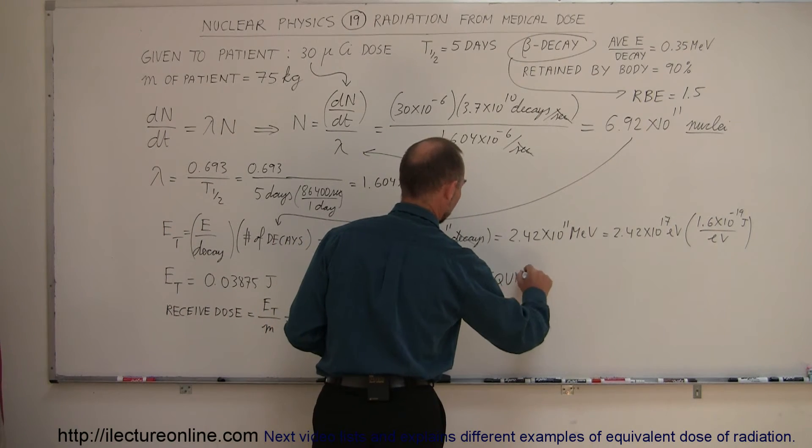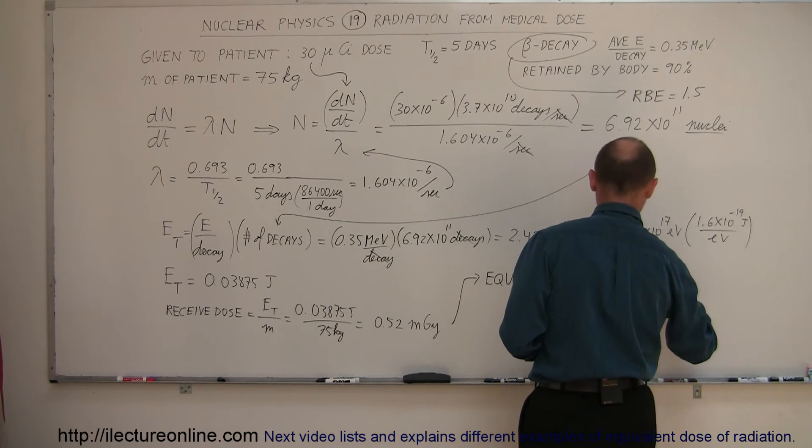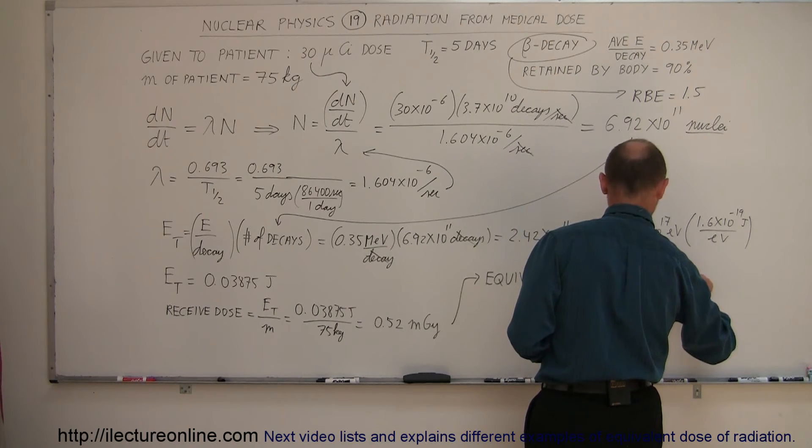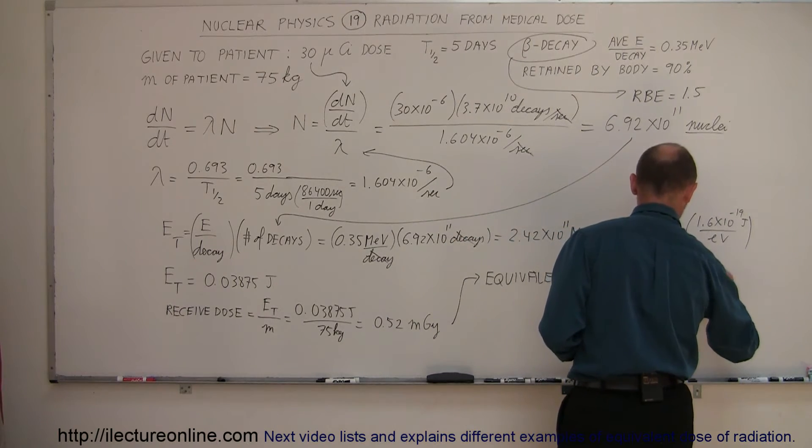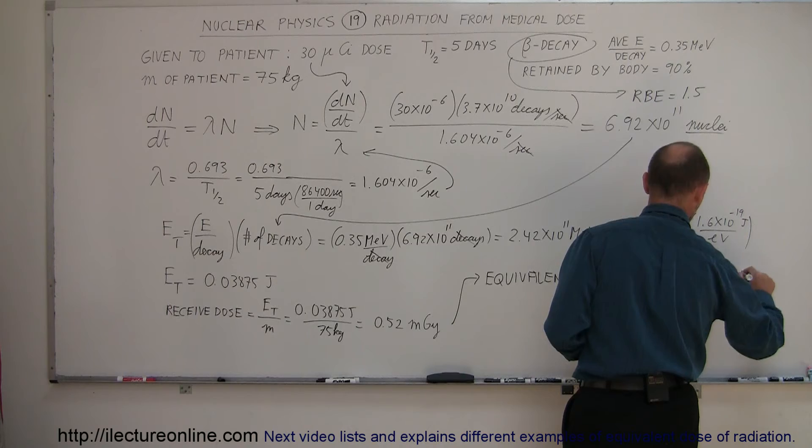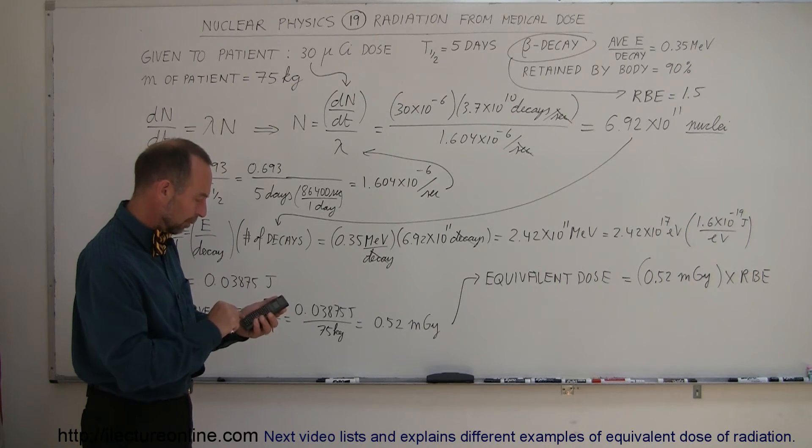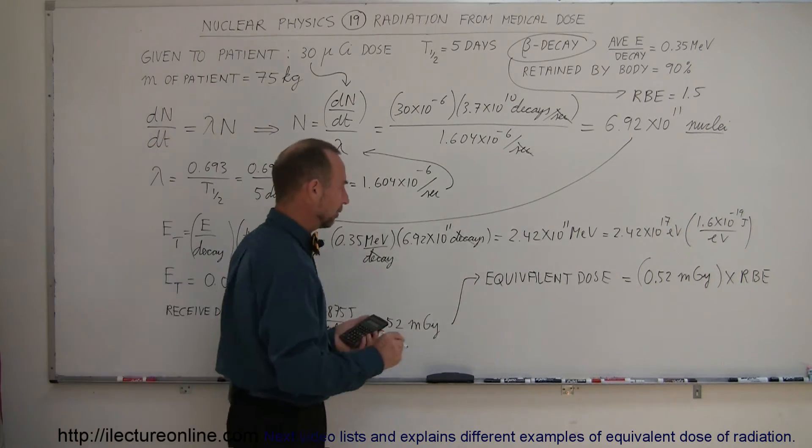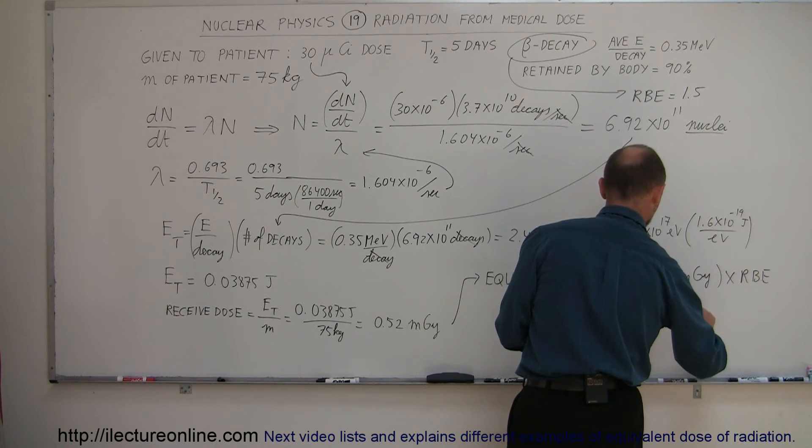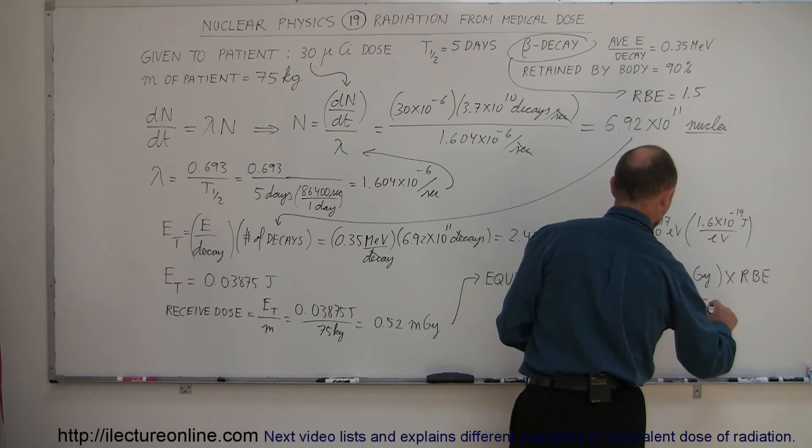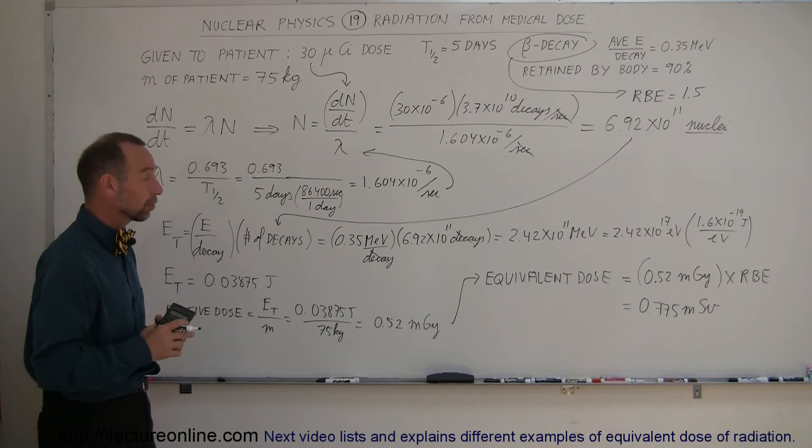So to get the equivalent dose - let's take a look at that. So the equivalent dose is equal to the received dose, the 0.52 milligrays, multiplied times the RBE. Since the RBE in this case is 1.5, we multiply that times 1.5. So this gives us a dose of 0.775 millisieverts, and sieverts of course is the unit of the equivalent dose, which is the one that we're really concerned with.